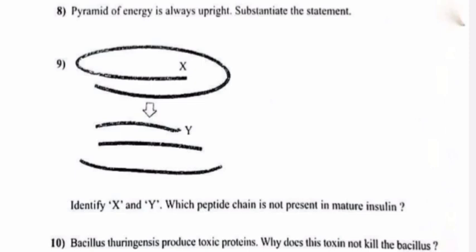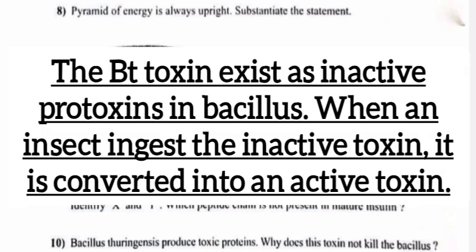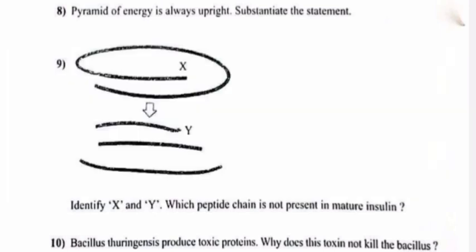Question 10: Bacillus thuringiensis produces toxic proteins. Why does this toxin not kill the Bacillus? Answer: Bt toxin exists as inactive protoxins in Bacillus. When an insect ingests the inactive toxin, it is converted into an active toxin.